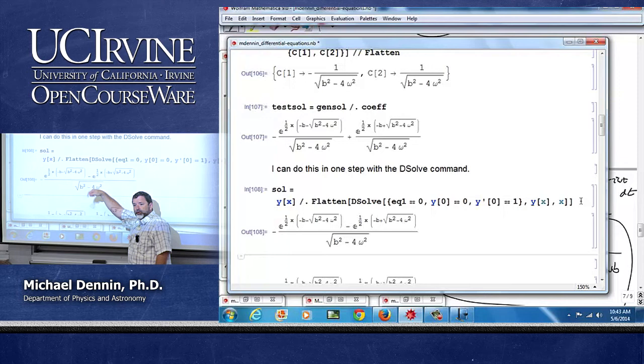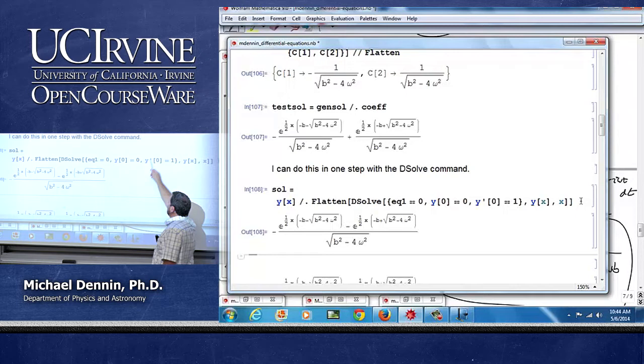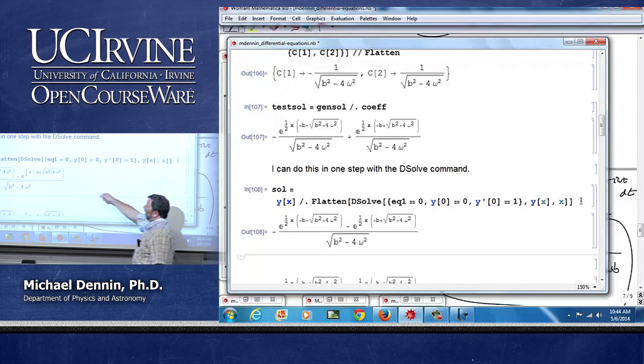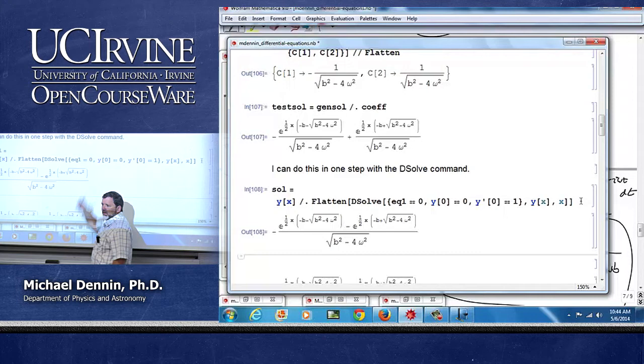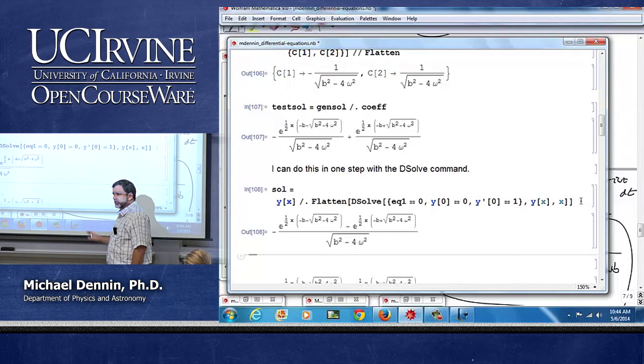And you might say, well, why did you do all that work? Because I can do it in one step with DSolve. Right? What's the syntax? Just like solve can solve multiple equations, DSolve can solve coupled equations. What are the coupled equations I want to solve? My differential equation equal to zero, y at zero equal to zero, and y prime of zero equal to one. And then I'm solving for y of x and x, and I get it out. And you can see those are exactly the same. There's just, this one came out in a slightly different form than that one.